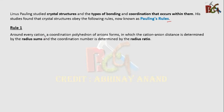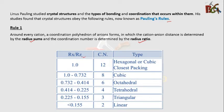The first rule of Pauling's is: around every cation, a coordination polyhedron of anions forms in which the cation-anion distance is determined by the radius sum, and the coordination number is determined by the radius ratio. We have already talked about this in a previous video — the coordination number is related to the radius ratio, and different radius ratios correspond to different coordination numbers. This relationship is defined by the first rule of Pauling's.